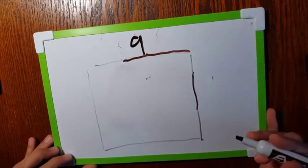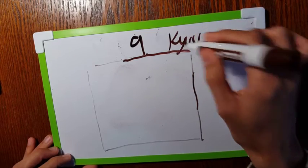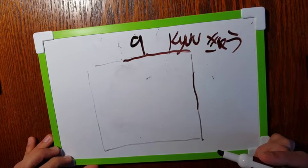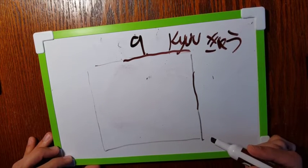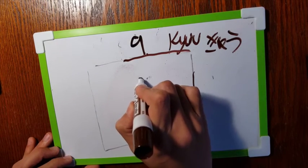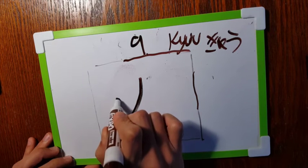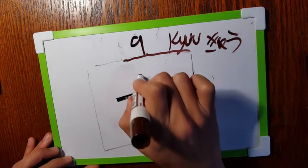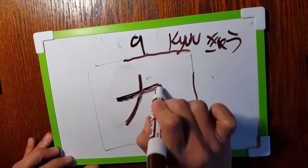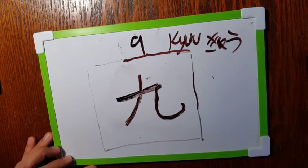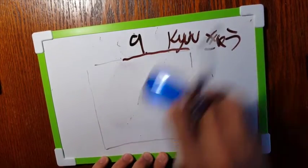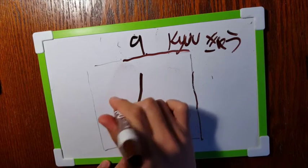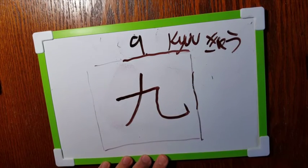Number nine, kyuu. Two strokes. Let's start from top to bottom, go like this, and then you start from right here. This is one single stroke. One, two. We'll write it one more time. One, two.